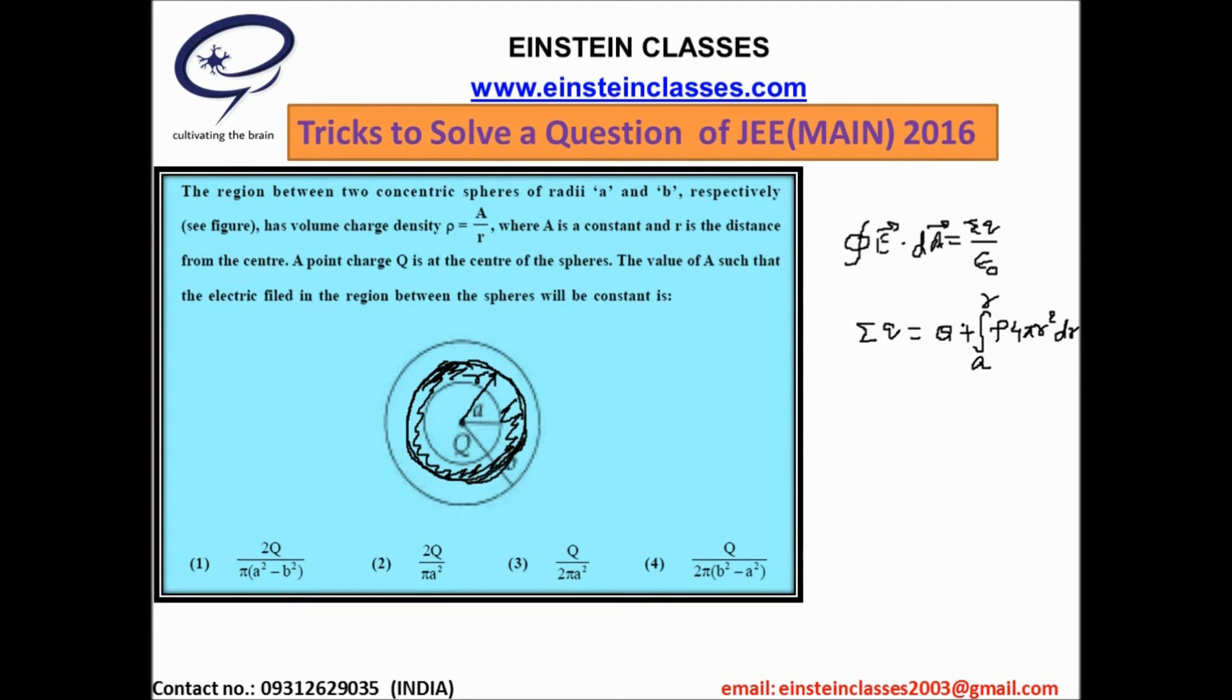whole result will be independent of the radius of the outer sphere b, and hence the value of a, this value of a must be independent of b. That means according to this above discussion, option 1 and option 4 will be simply eliminated. The correct answer will be option 2 or option 3.